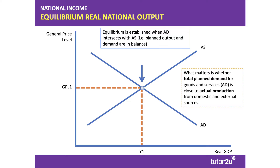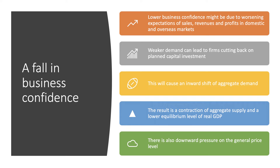Our first example is a fall in business confidence. This might be due to deterioration in sales expectations, revenues, and profits, either in the home market or export sectors. Good examples include delays to investment caused by Brexit uncertainty or the lingering effects of the US-China trade war. Weaker demand causes firms to scale back on planned capital investment in new factories and new technologies, and that fall in investment triggers an inward shift of aggregate demand.